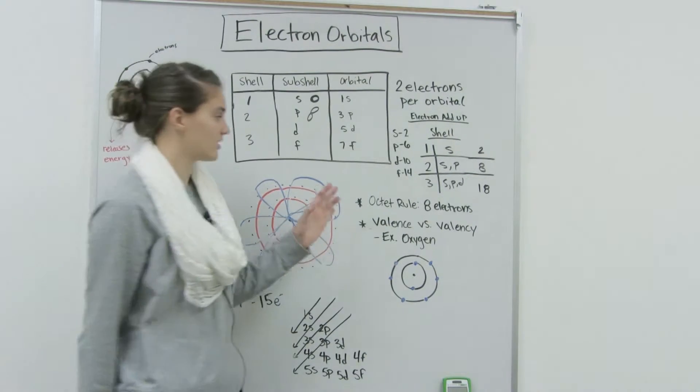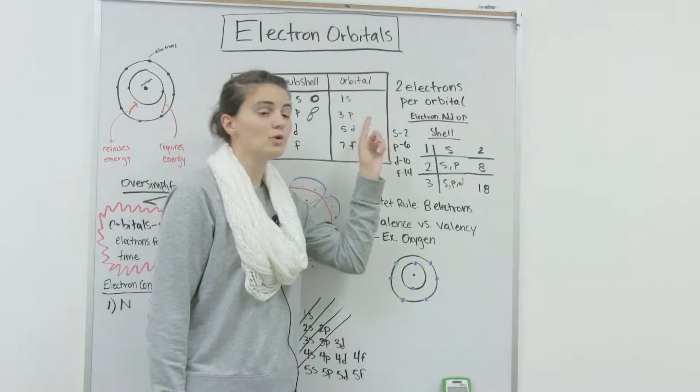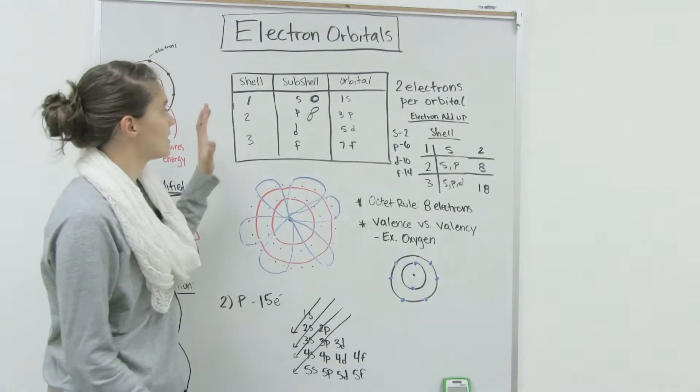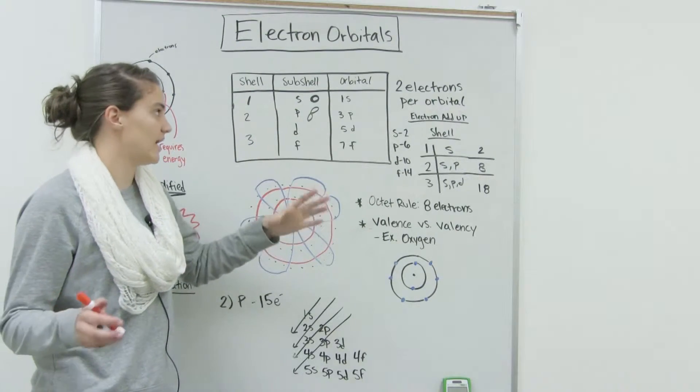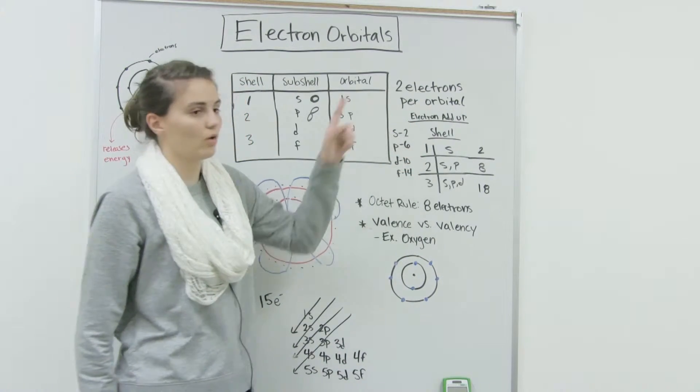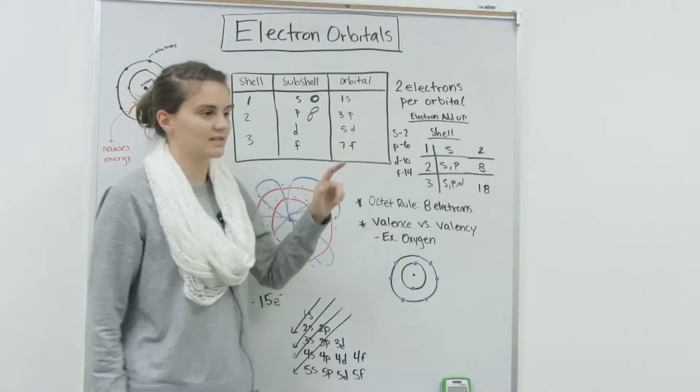So then let's start figuring out how many electrons are in each shell. So an important rule to remember is that there are two electrons per orbital. It doesn't matter the size or the distance or the type it is. They all contain two electrons. So if we know there's one S orbital, that means the S orbital holds two electrons. There's three P orbitals. The P orbitals hold six electrons.